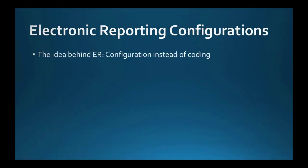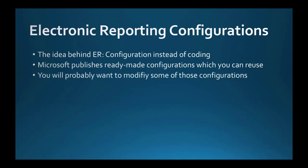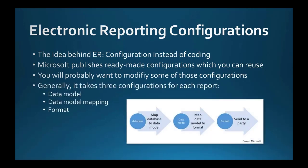The idea behind electronic reporting is to use configurations instead of coding. That means that instead of developers developing requirements in code, functional consultants can set up configurations in electronic reporting to achieve desired reporting results. Microsoft has prepared over 1800 configurations so far, and it keeps adding new ones. You can reuse those configurations such as they are. But you will probably also want to create your own configuration provider and derive, which means copy and paste some existing configurations and modify them according to your needs. To be able to run reports via electronic reporting, you need a data model, a data model mapping and the format.